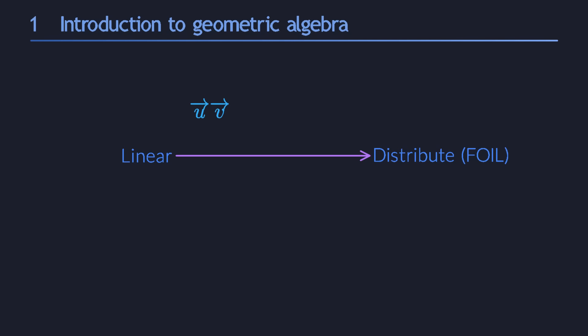That's great because it allows us to pull algebraic expressions apart into smaller pieces, which will all be composed from a small set of basis vectors. We can then just focus on how the new product behaves on those basis vectors. And that is also pretty easy because there are really only two rules. When we multiply a basis vector with itself, the result is 1.